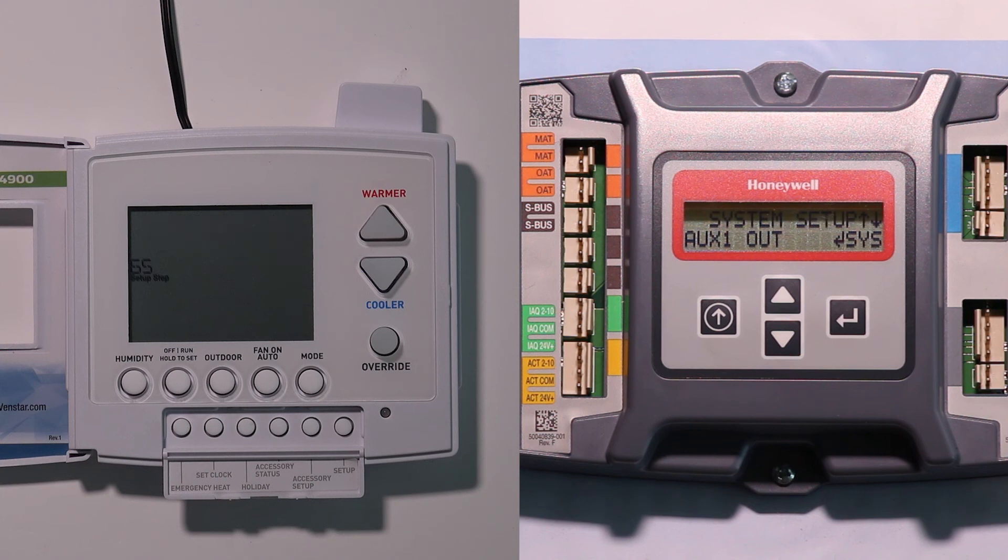As you can see, there's not as much complexity to that as you might have thought there was, but there are a few things we do have to set up on both the economizer controller and the thermostat in order for them to play nice together on this code discussion. And then obviously there's a couple more wires than we normally would have as well. Hopefully that helps you guys set these up in the field. See you on the next video. Thank you.